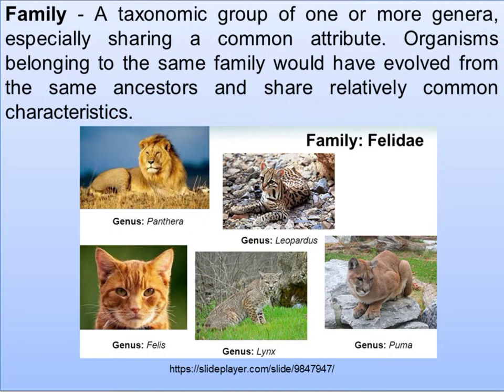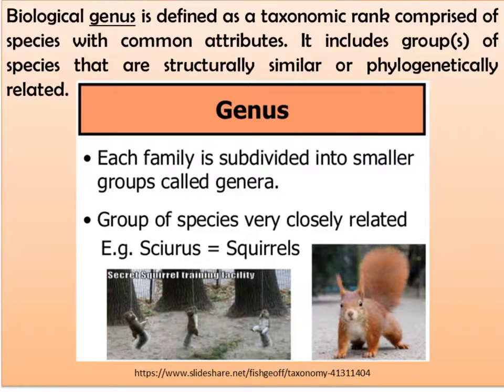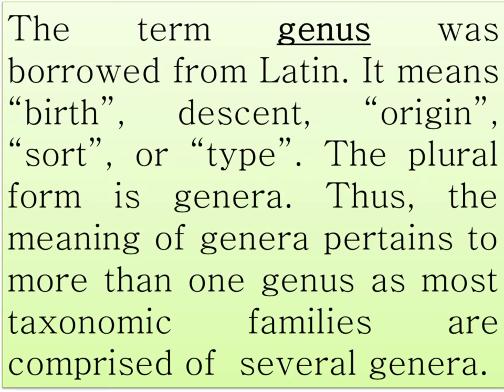Family is a taxonomic group of one or more genera sharing a common attribute. Organisms belonging to the same family would have evolved from the same ancestors and share relatively common characteristics. Biological genus is defined as a taxonomic rank comprised of species with common attributes, including groups that are structurally similar or phylogenetically related. The term genus was borrowed from Latin, meaning birth, descent, origin, sort, or type. Its plural form is genera, pertaining to more than one genus, as most taxonomic families are comprised of several genera.